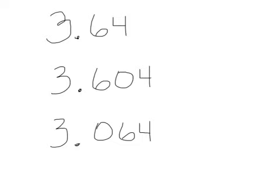Here's another example. We have a whole number and parts of a number or a decimal. This one is three and sixty-four hundredths, which is similar to saying three dollars and sixty-four cents. Here we have three and six hundred four thousandths. And here we have three and sixty-four thousandths.